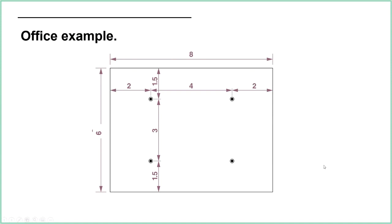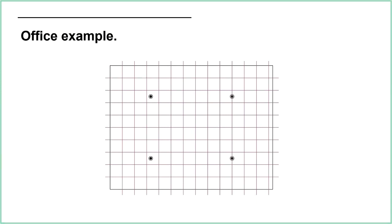Of course, that doesn't happen much in reality because we have obstructions to deal with. One example is a ceiling grid. I've put a ceiling grid on top of that head placement and you can see two of my heads are slightly off-center. Ceiling grids are typically 600mm x 600mm squares. The other two sprinkler heads end up on the join of two ceiling tiles. Generally, people want sprinkler heads in the center of a tile.